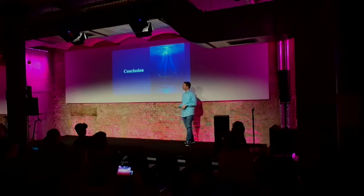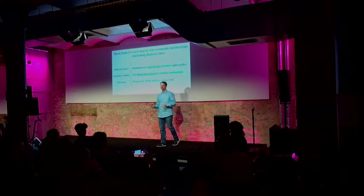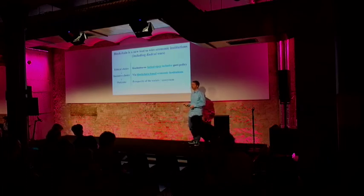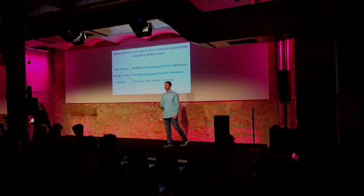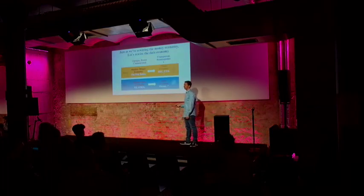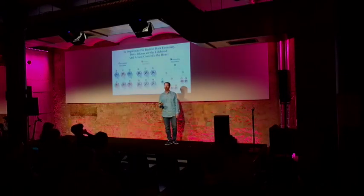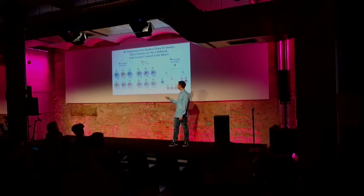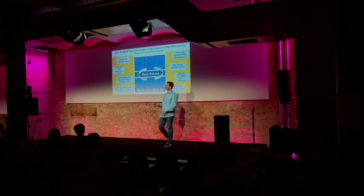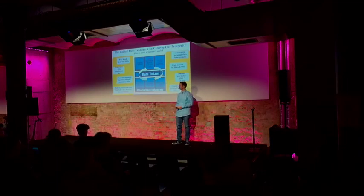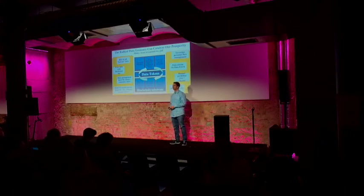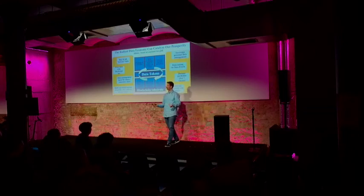What I talked about in my talk today is really about an infrastructure to help power this. To wrap things up: blockchain is a new tool to wire economic institutions, including radical ones — where we can have a locked open, inclusive policy, government or non-government, via blockchain-based economic institutions that can lead to new prosperity for our society and ecosystems. Just as we're rewiring the money economy, let's rewire the data economy. To implement this, data tokens are the lifeblood and access control is the heart. We can have non-fungible, fungible, composable data tokens. With this, we can create this radical data economy that catalyzes the prosperity of our society — everything from buying and selling private data, to data unions, to perhaps the ultimate: data as collateral for stable coins. Thank you very much.